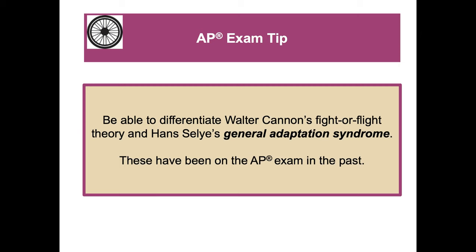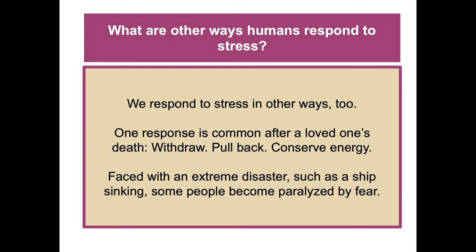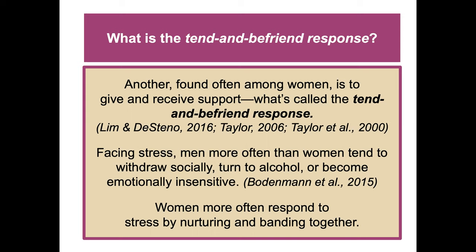What are other ways humans respond to stress? One response, common after a loved one's death, is withdrawal — pulling back to conserve energy. Faced with extreme disaster, such as a ship sinking, some people become paralyzed by fear. Another response, found often among women, is to give and receive support — what's called the tend-and-befriend response. Men more often than women tend to withdraw socially, turn to alcohol, or become emotionally insensitive, while women more often respond by nurturing and banding together.